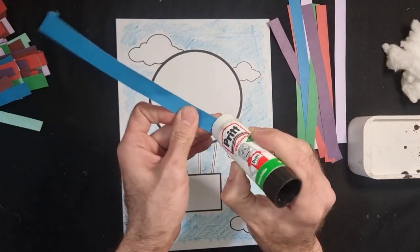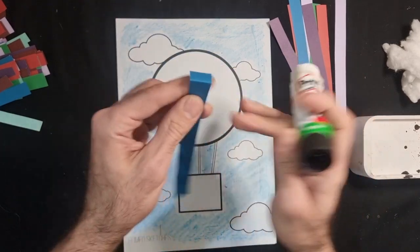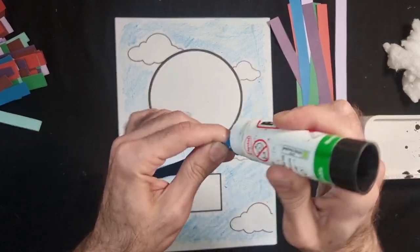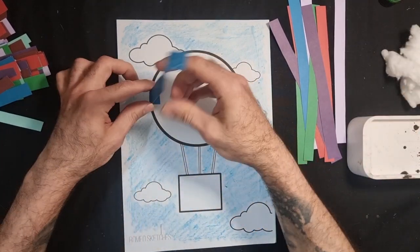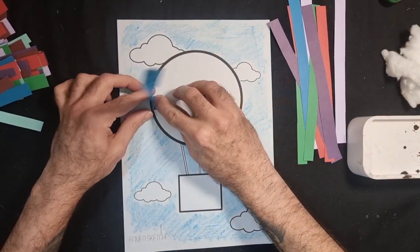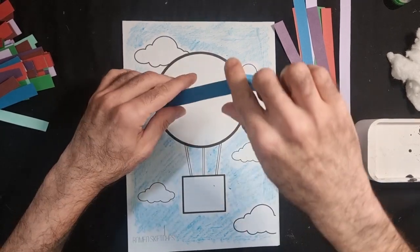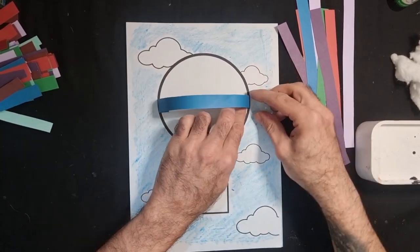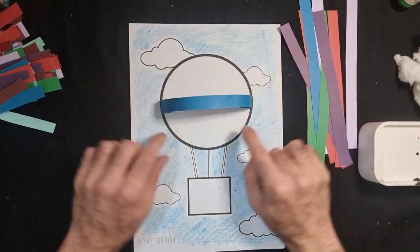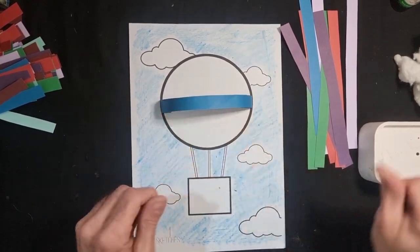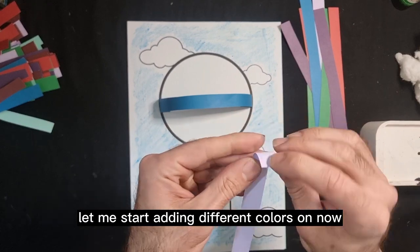Then get your glue, glue the tabs, and then we've got our first bit done and we start adding different colors on now.